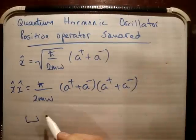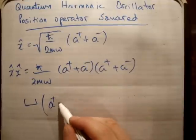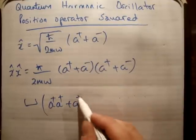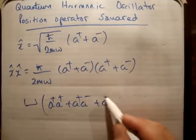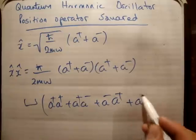So ignoring the constants again, we're going to have a plus a plus, plus a plus a minus, plus a minus a plus, plus a minus a minus.